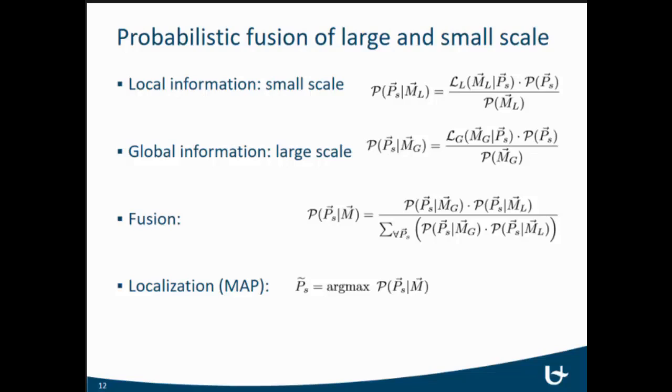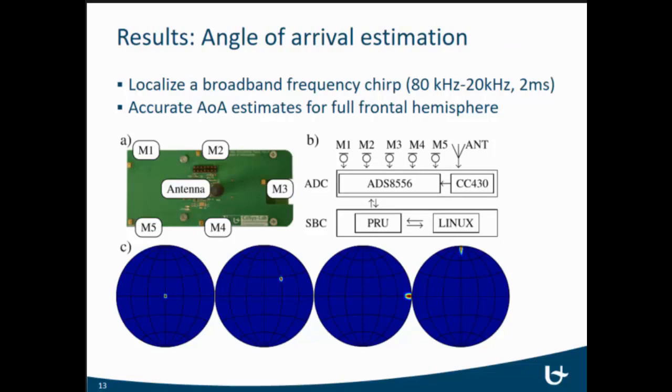Results we got from this—these are real results. We built the array, and then we created a broadband frequency chirp. That is the same thing that you would expect from a bat. It's a non-linear frequency sweep from 80 to 20 kilohertz in about a millisecond. We see that we can make accurate angle of arrival estimations using a single PCB—using the single five-microphone array.